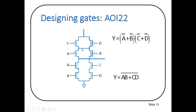For the pull-up network of the AOI22 gate, A and B will come in parallel, C and D will come in parallel, and these two combinations will be in series — it's the complementary of the pull-down network. We use only P-MOS transistors in the implementation of this pull-up network. Apply VDD and ground. This is the standard procedure of implementation of any combinational logic circuit.